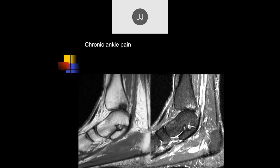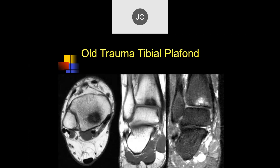Case: Chronic ankle pain. There is a lesion with very low signal intensity and fuzzy margins — typical of chronic disease — along with subchondral cyst formation. This is classic for chronic degenerative disease secondary to prior trauma, consistent with a chronic osteochondral injury of the tibial articular surface.